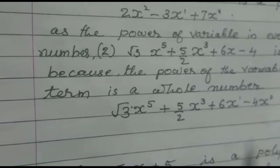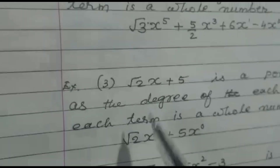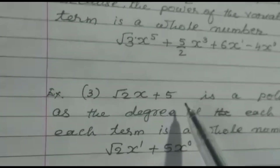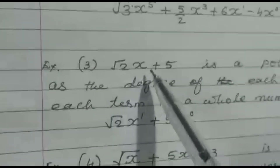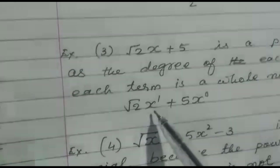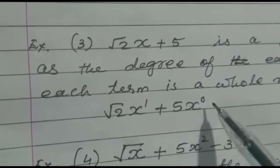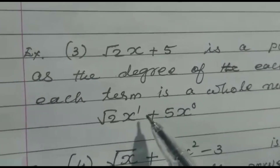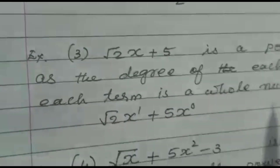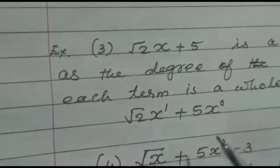Let's see the third example: √2·x + 5. When we examine the power of the variable x, in the first term the power is 1 and in the second term it is 0. Since 0 and 1 are whole numbers, this is also a polynomial in one variable x.